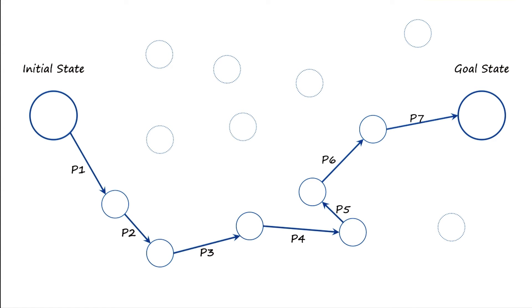I want to come up with a path in this state space that takes me from the initial state to the goal state. Here is one path. This is not the only path, but this is one path to go from the initial state to the goal state.